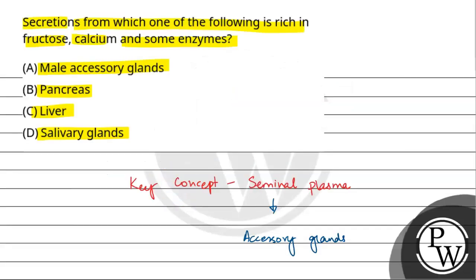The first option is male accessory glands. Yes, seminal plasma is made from male accessory glands. It is not made from pancreas, it is not made from liver, it is not made from salivary glands.